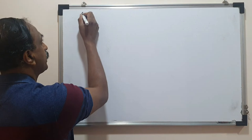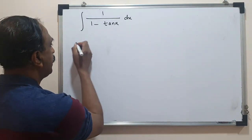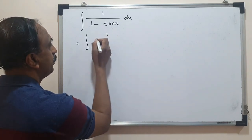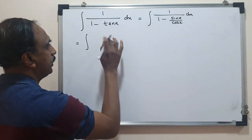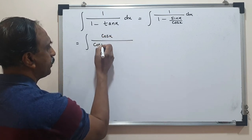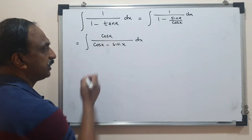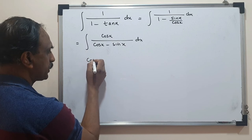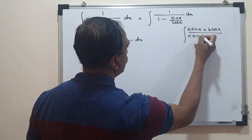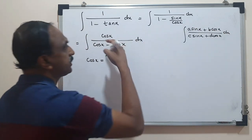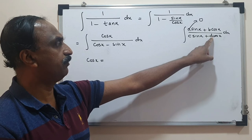Now consider integral of 1/(1 - tan x) dx. Converting to sin and cos: 1/(1 - sin x/cos x) = cos x/(cos x - sin x) dx. This is of the same form as (A sin x + B cos x)/(C sin x + D cos x), with A = 0. Write cos x as a combination of the denominator (cos x - sin x) and its derivative (-sin x - cos x). Mentally balancing: if we add the denominator and the negative of its derivative, we get 2 cos x.